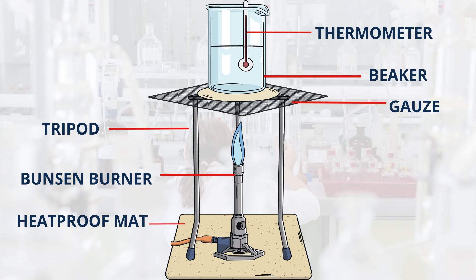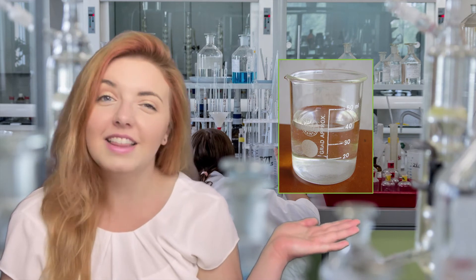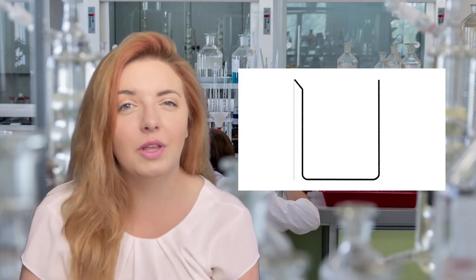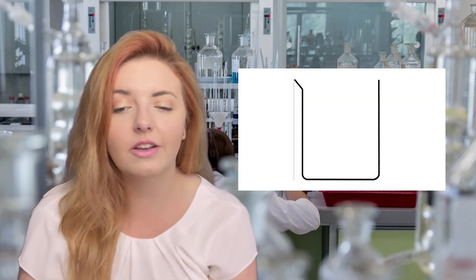In science we use diagrams to show our practical experiments and identify some of the equipment used. To make it simple we draw beakers like this. Let's see if we can match up some of the diagrams to the equipment they represent.